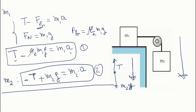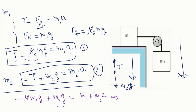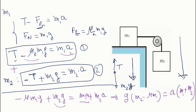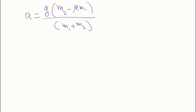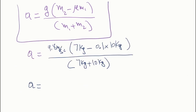If we add equation 1 and equation 2, we see that T minus T vanishes. We get: M2·G minus μk·M1·G equals (M1 + M2)·a. Factoring out G gives: G·(M2 minus μk·M1) equals (M1 + M2)·a. Dividing both sides by (M1 + M2) gives the acceleration. The acceleration is 3.45 meters per second squared.